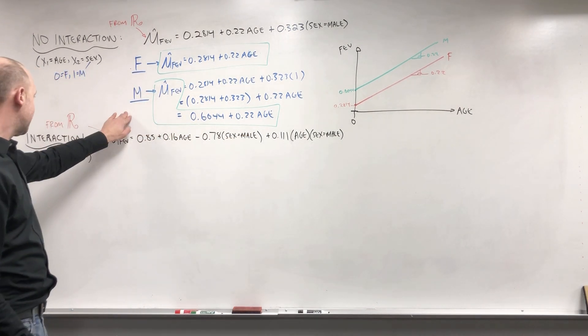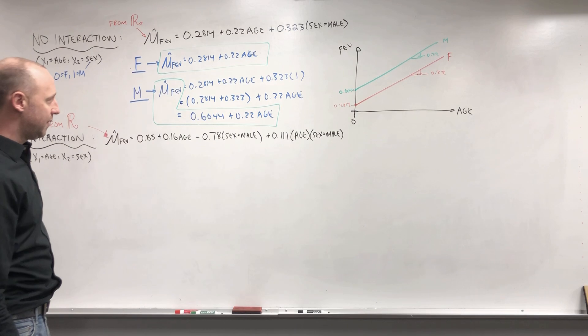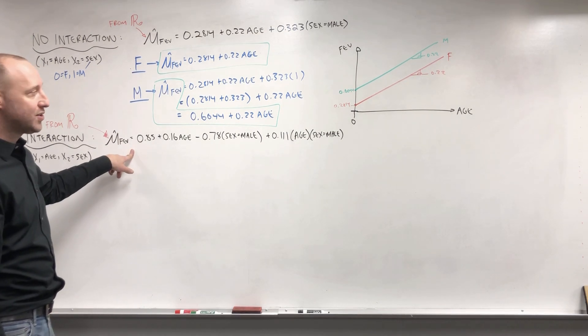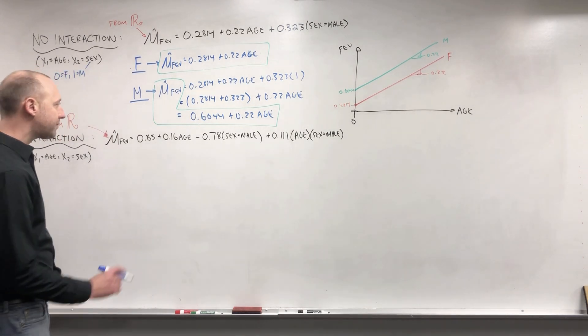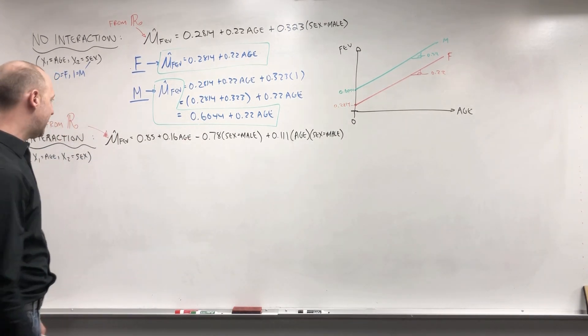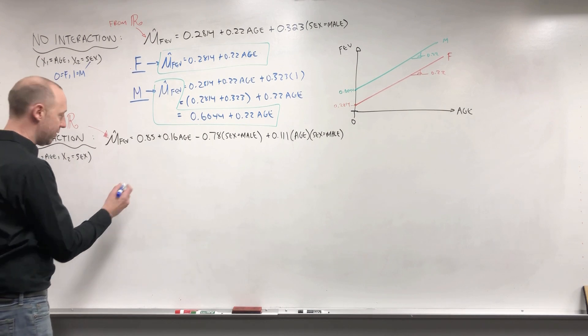Now, let's look at the same set of data, but if we allow these slopes to be different, or if we were to think there's interaction or effect modification. So here's the model we get when fitting it in R or any piece of software.